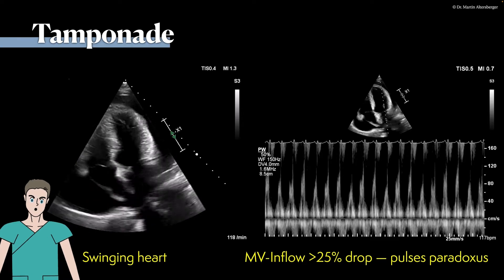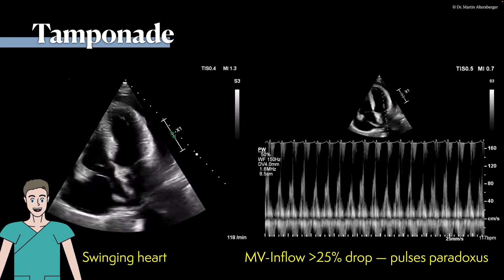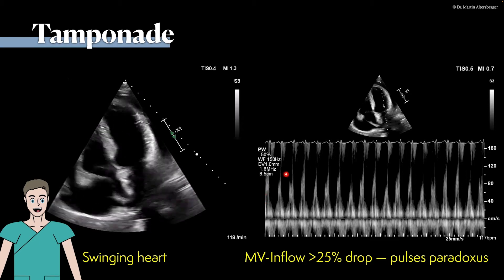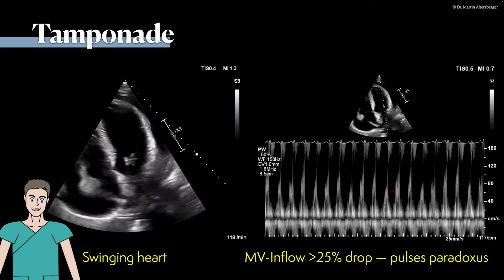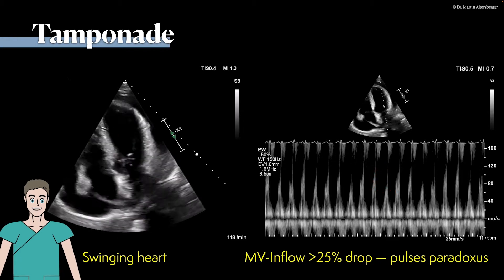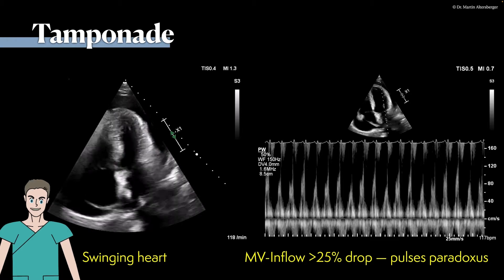We can also utilize a pulsed-wave Doppler measurement. We place the pulsed-wave Doppler at the tips of the mitral valve and take a look at the mitral valve inflow. We see a certain curve, and if there is above a 25% drop, it resembles a so-called pulsus paradoxus. This also confirms that the pericardial effusion is hemodynamically relevant — tamponade.